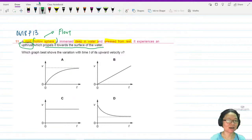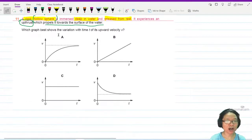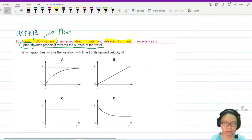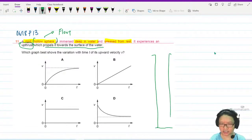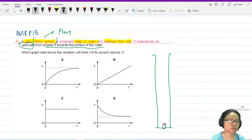Okay, our guess is correct. Which graph shows the variation with time t of its upward velocity? Okay boss, when we are talking about deep, deep in water, so maybe I have this very tall cylinder and I put this tiny hollow sphere here and I fill it to the brim with water. And then I let go.